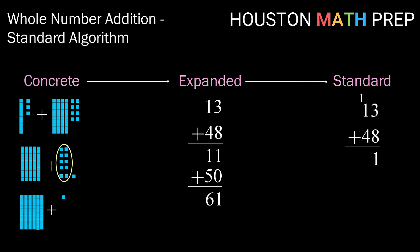We call that carrying. So we're carrying that 10 over instead of bringing it along like in the expanded algorithm. Now we're going to add up all the digits in the tens place. So 1 plus 1 plus 4 is 6. So we end up with 61.